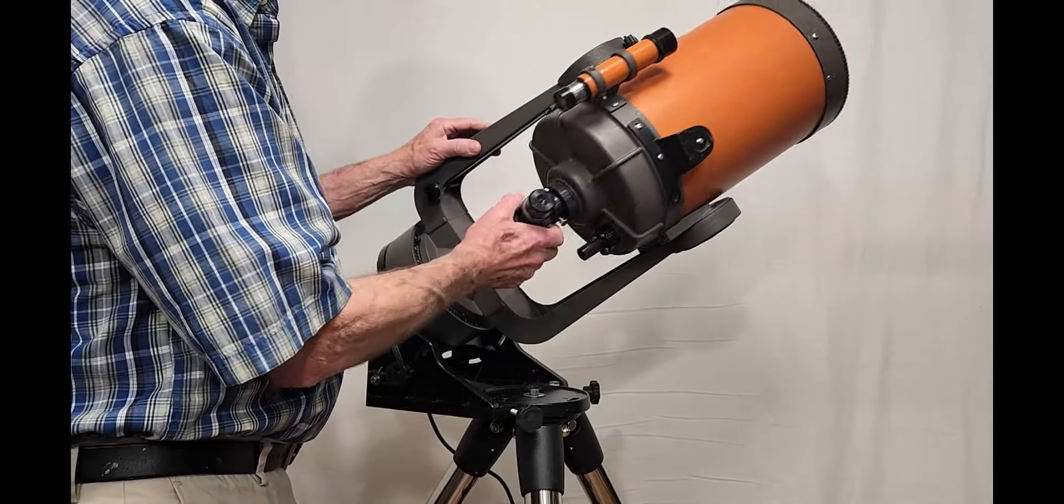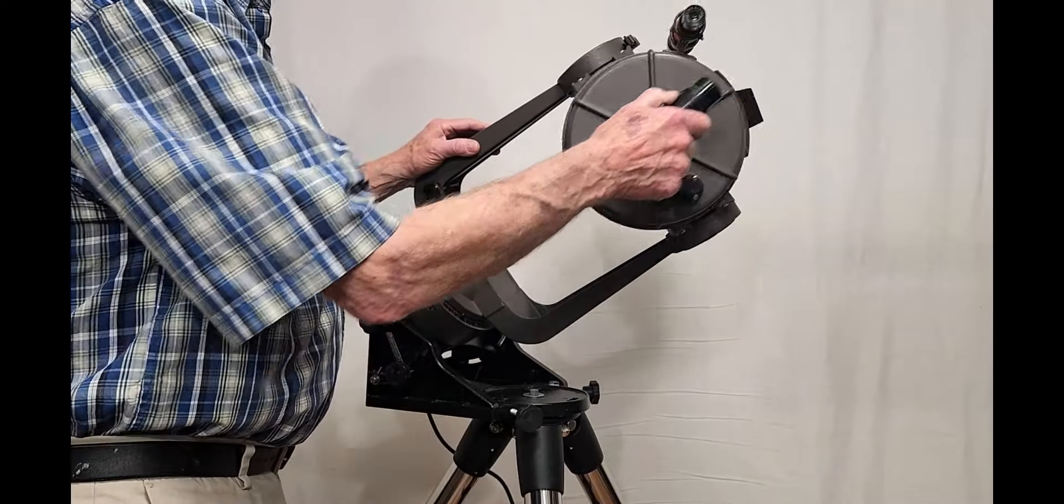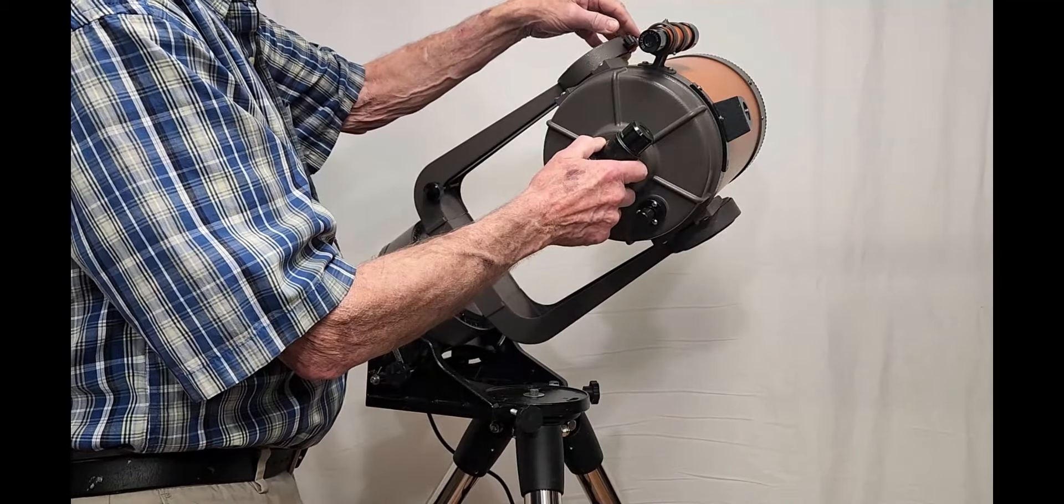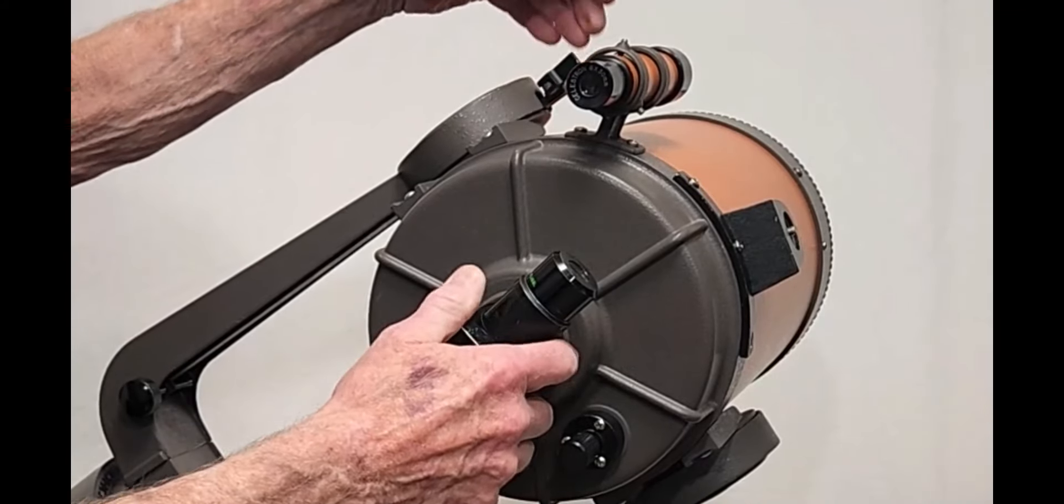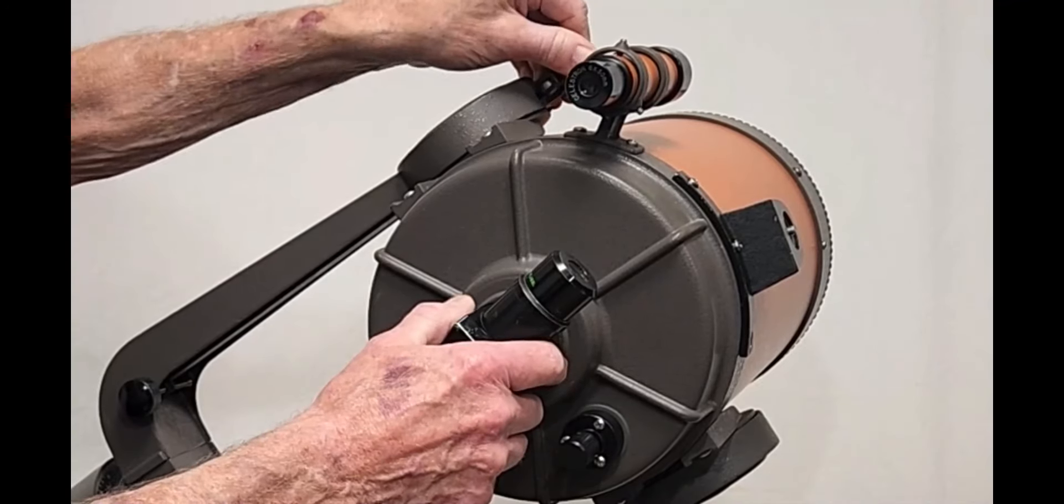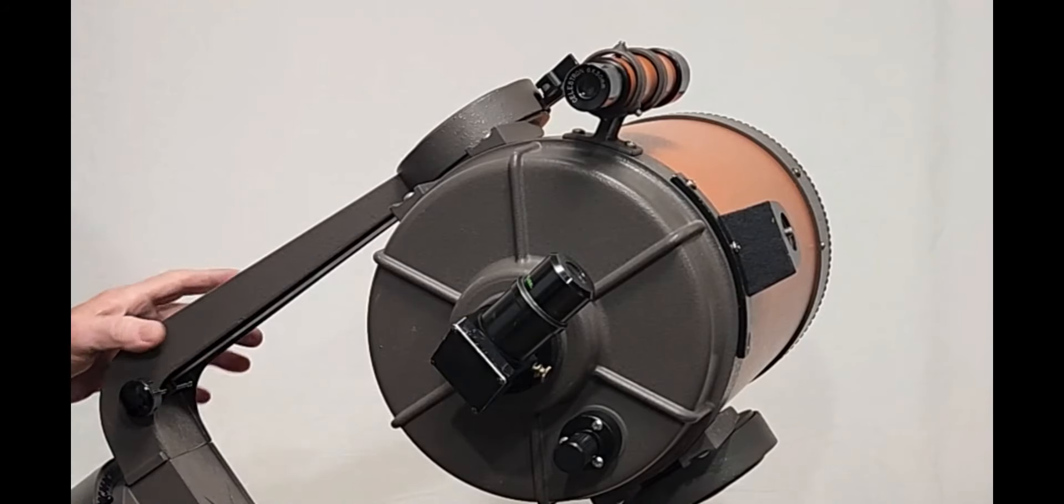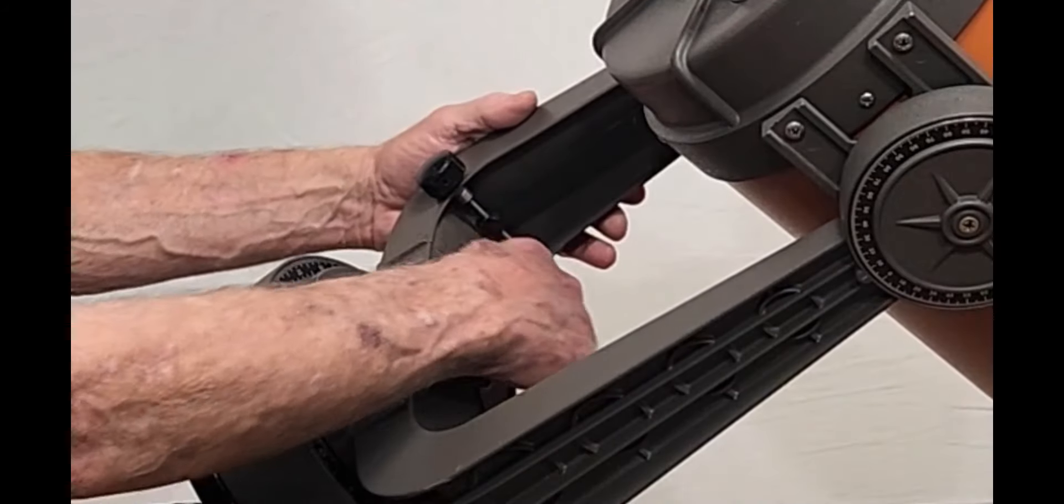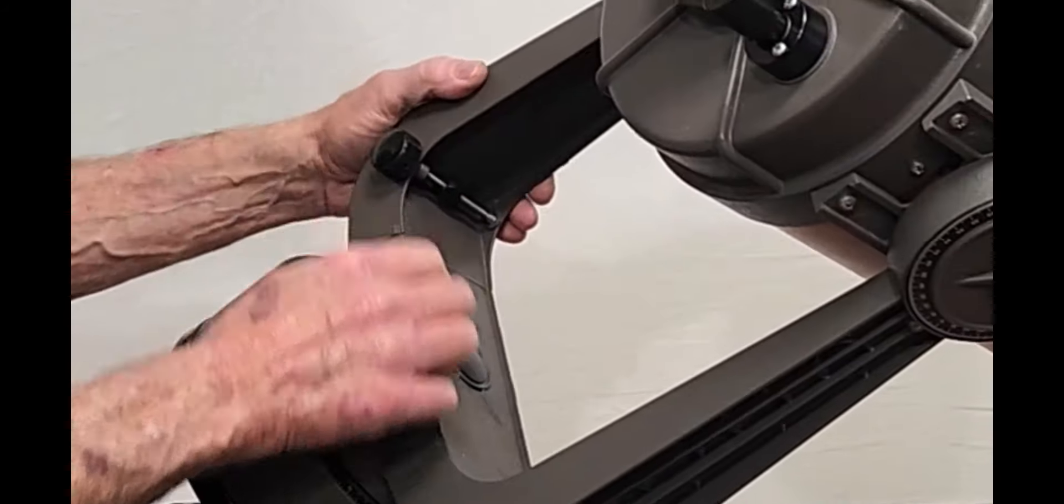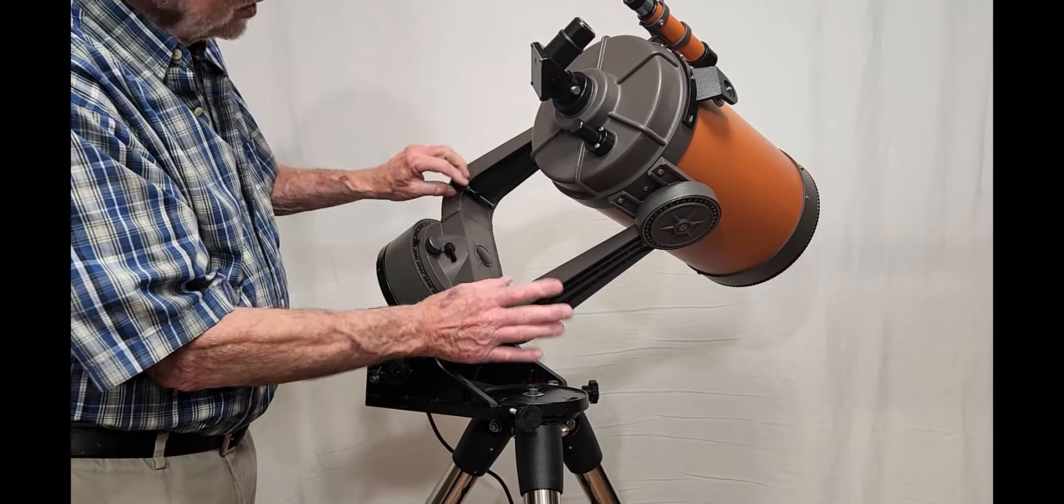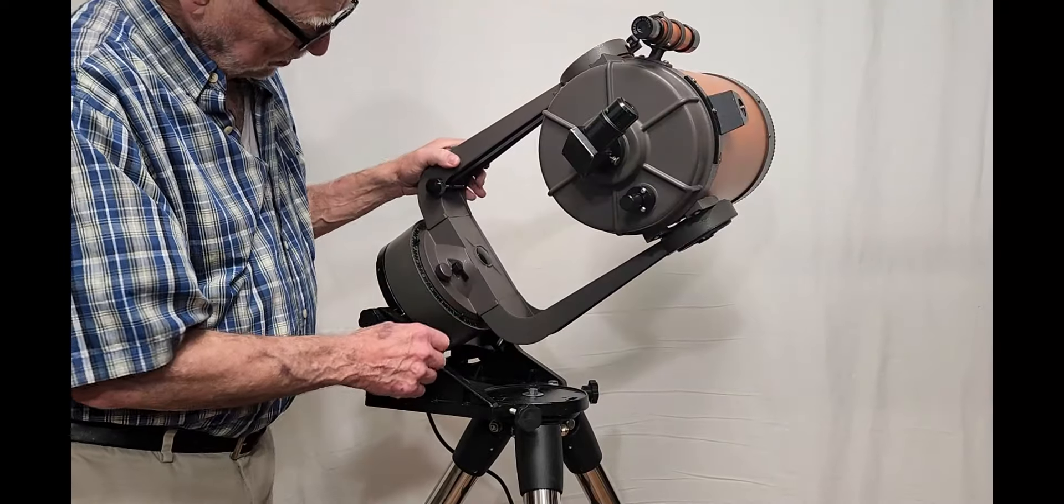This scope has what I would call very basic but workable kind of mechanism for the mount. This is your lock for the declination. So you lock it down there and then you have this which gives you a little bit of tangent. There's a tangent arm right down here. There's a little bit of tangent motion you get from that. It's enough. It's plenty. So that's how that works.